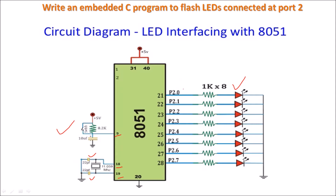When we send logic 1 on these port pins, the LED will glow because the anode is connected to the port terminal and the cathode of all LEDs is connected to ground. So when we send logic 1, the LED will glow, and when we send logic 0, the LED turns off. For this interfacing diagram we will write a program in Embedded C.